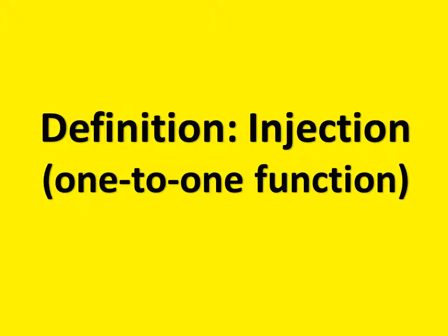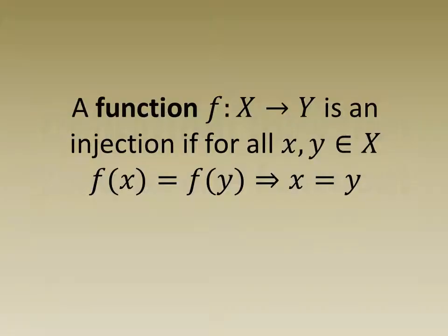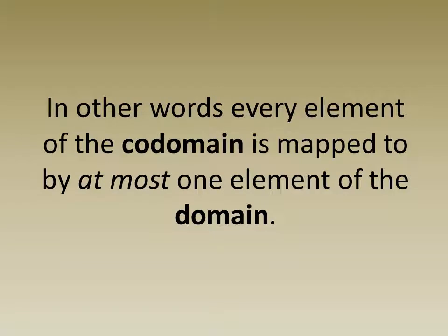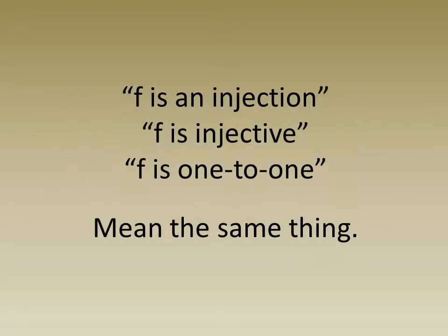Definition: injection or one-to-one function. A function f is an injection if for all x and y in the domain of f, f of x equals f of y implies x is equal to y. In other words, every element of the codomain is mapped to by at most one element of the domain.